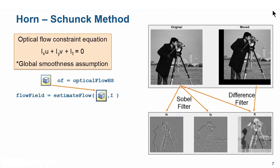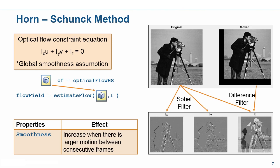Let's go back to the presentation. We talked about the Horn-Schunck method and discussed the smoothness parameter. Please refer to the documentation link in the resources section to get a full list of parameters supported for this algorithm. In our example, we decreased the smoothness to detect smoother movements. We can increase it to detect larger motion between consecutive frames, but this also slows down the computation because the search space is bigger.